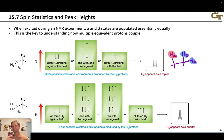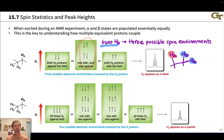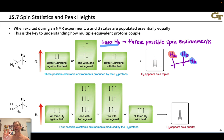When there are two neighboring chemically equivalent Hb protons coupled to Ha, there are actually three possible spin environments. Both could be against the field; one could be with and one against — these two arrangements give equivalent chemical shifts and are twice as likely; or both could be with the field. So we see a triplet, and the middle subpeak has a higher height than the outer two because it's twice as likely to appear.